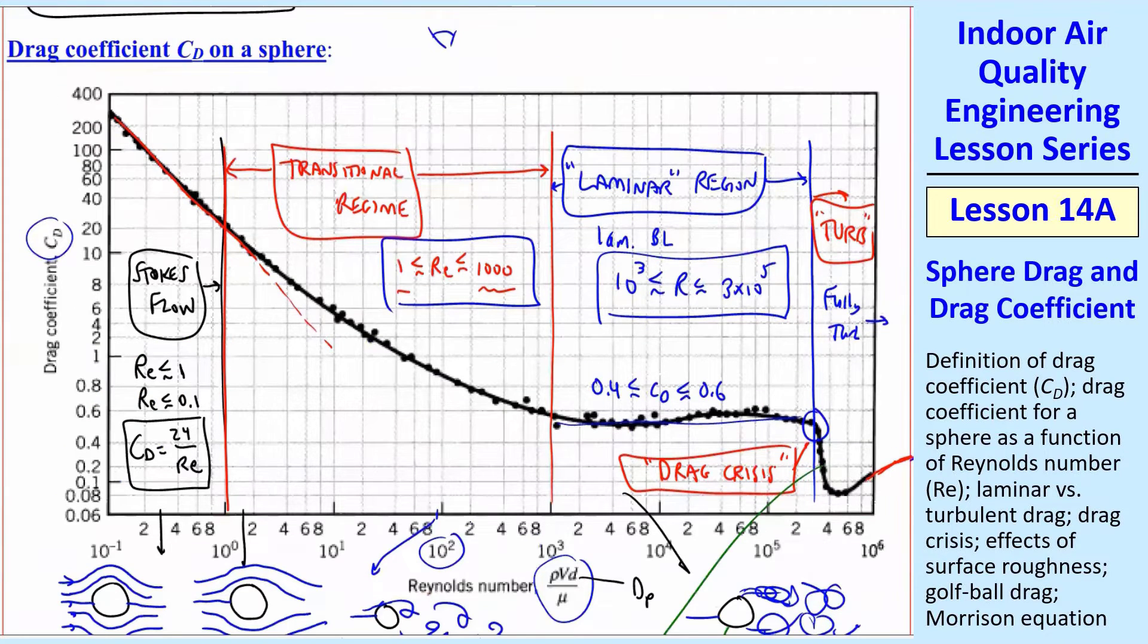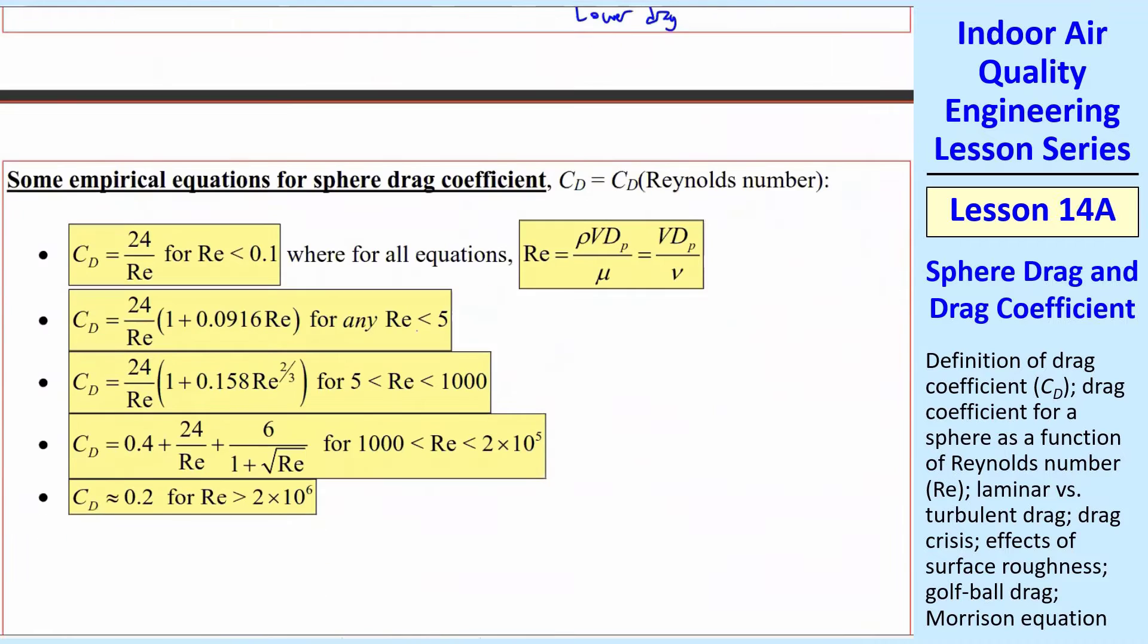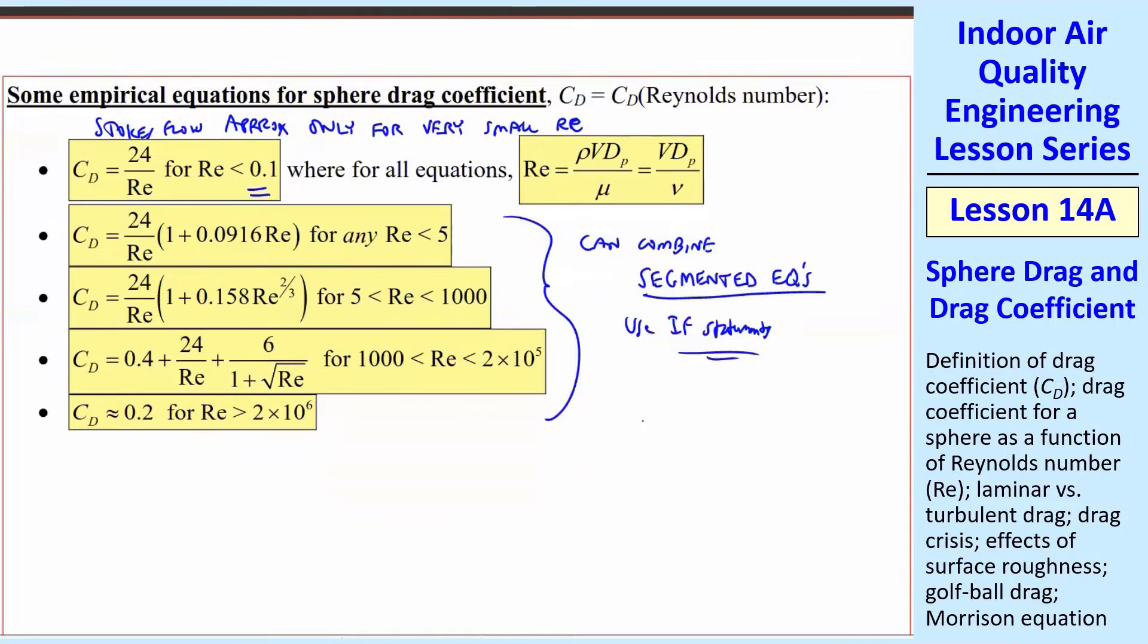So we don't want to have to pick off things from the graph here. We want equations. Here's a whole bunch of empirical equations for sphere drag, and up until recently, I would always do this with if statements in Excel or any other software. We can combine these into segmented equations, in other words, piecemeal, where you use if statements. By the way, this first one is Stokes flow here, and that's where I said we're only going to use that if the Reynolds number is much less than 1. It's an approximation, and it's only for very small Reynolds number. So here's Reynolds number for all these equations. CD is just a function of Reynolds number.